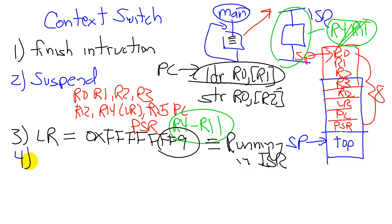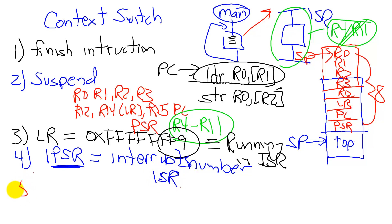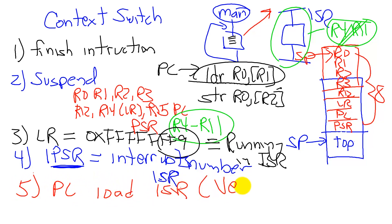We will see why this special pattern is required when we see the details of how we return from an interrupt to the main program that was interrupted. The IPSR register is going to be set to the interrupt number — there are hundreds of interrupts, and this register will contain the interrupt number of the device currently executing in the ISR. Finally, the program counter is loaded with the address of the interrupt service routine, and this is called the vector.